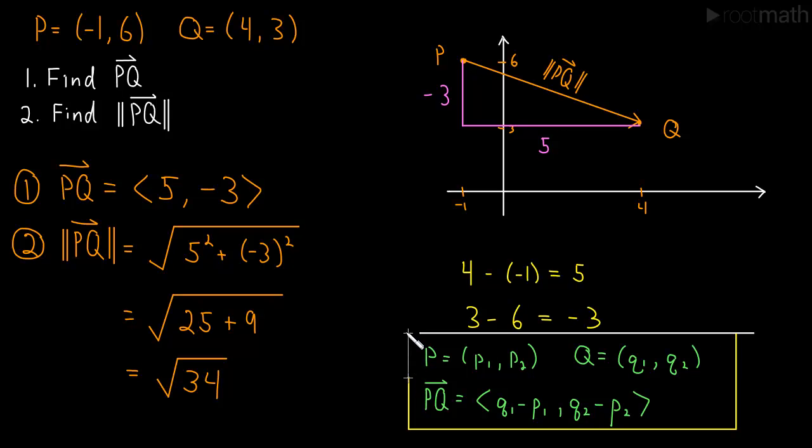I don't recommend memorizing it, but if you need to find the vector that lies between two points and conceptually this is very difficult for you, then here's a little formula you can use. But really, just look at the picture and then it's clear what we did. How did we get this component 5? Well, we had to move over by 5. We looked at the difference between 4 and -1.